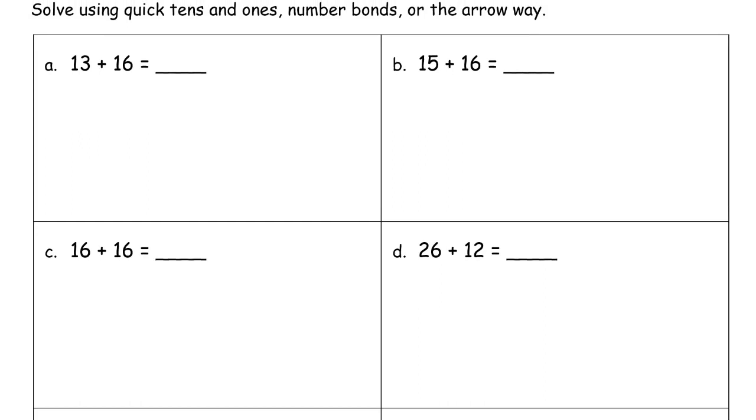For problem A, I'm looking at 13 plus 16, and I see 3 and 6. That makes 9, which is less than 10. So the strategy of making 10 is not going to be that great. It's going to be better to just take this, and it doesn't matter whether we add the ones or the tens first. Then add 10 to the 19.